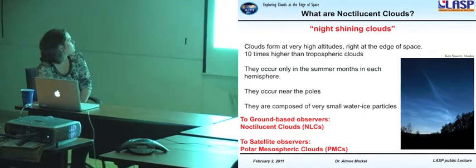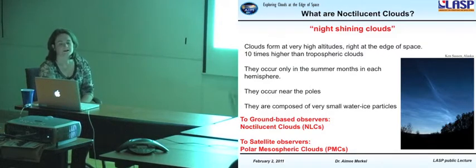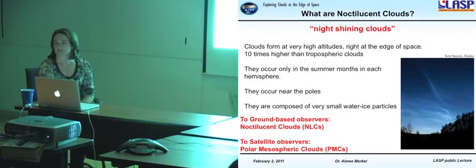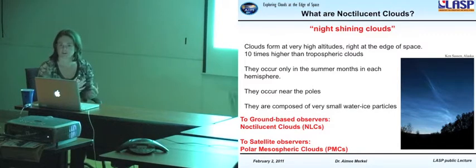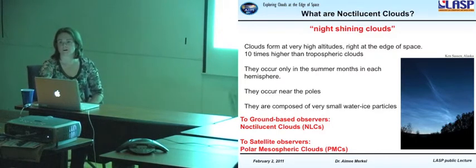For a long time, people thought they were self-illuminating, like the aurora, but we now know that they're scattered sunlight. They are formed very high in altitude. I'll show you a schematic of that in a minute. And they only occur in the summer months in each hemisphere. So in the northern hemisphere, they'd occur June to August, and in the southern hemisphere, right now they're occurring.